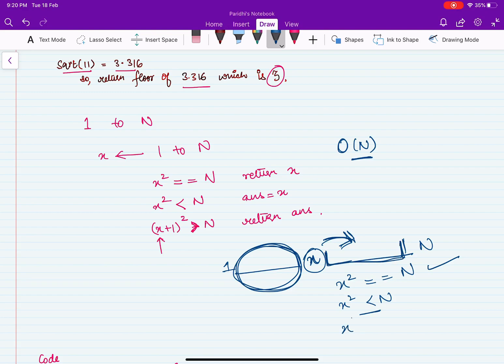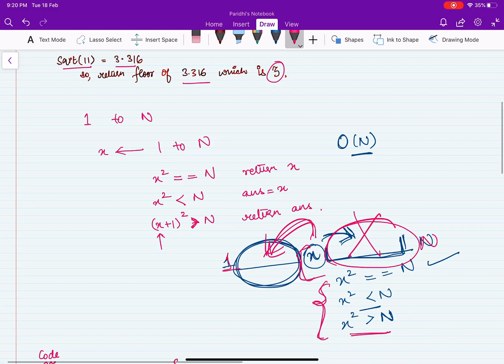Now the third condition is when x square is greater than n. If this is the case, then we know that any value which is greater than x cannot be the answer. That means we should look to our left, and we should also ignore this x because x square was greater than n. From here comes the intuition to apply binary search because we have a search space and we have conditions because of which we can reduce the space into half. So let's see the code for binary search.